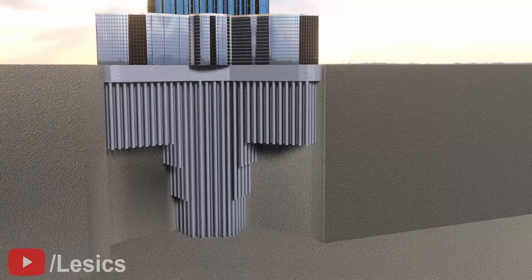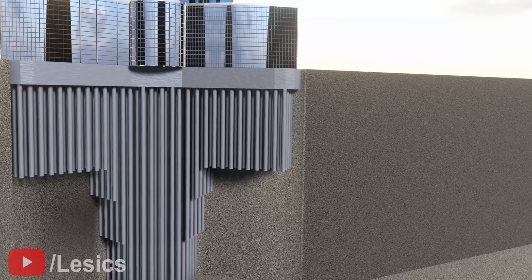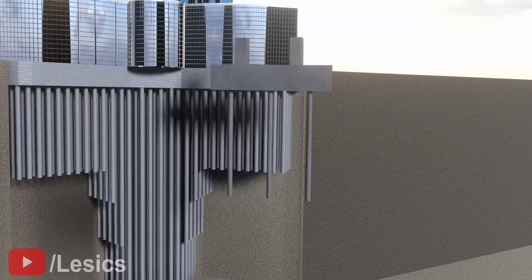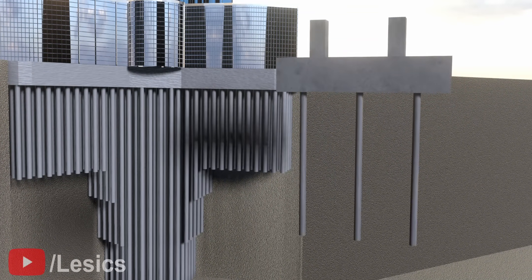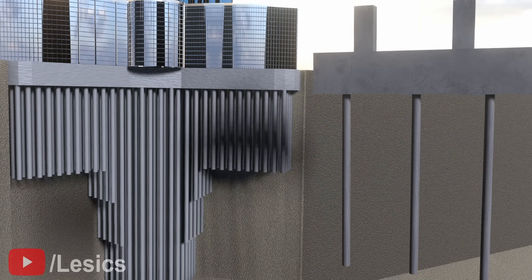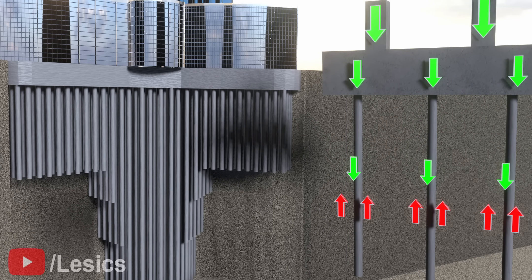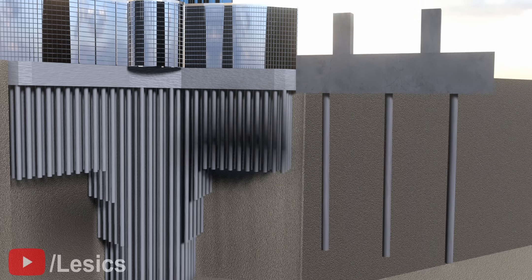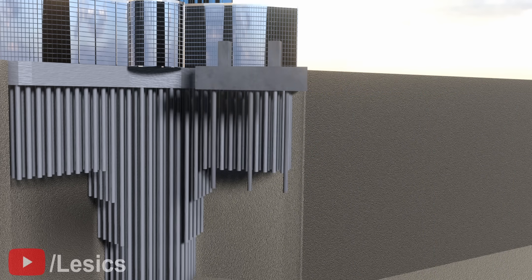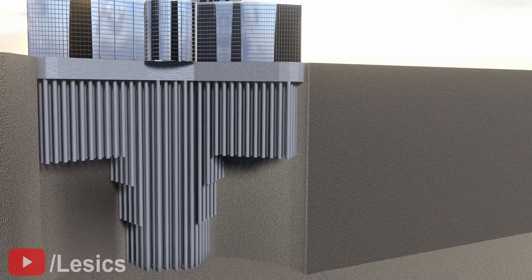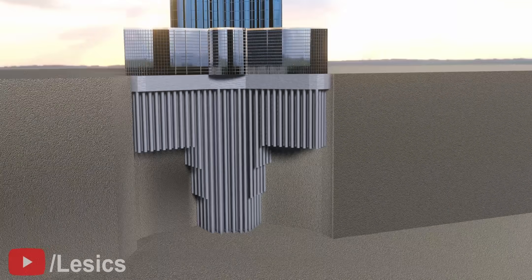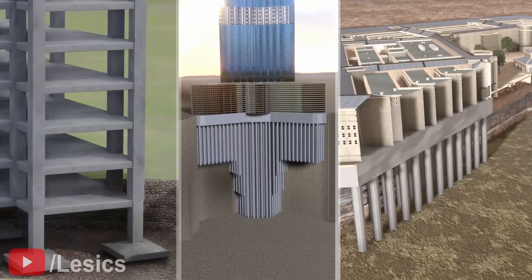Footings are the most important part of the foundation. Their job is to distribute the heavy load of the building concentrated on the columns to the wider surface area of soil to achieve structural stability. Let's analyze the importance of footings and their different types.